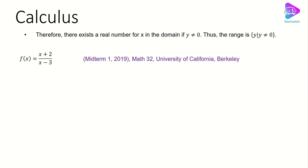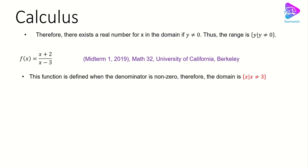Let's look at another example. This example has been extracted from a recent midterm from the University of California, Berkeley. You can plug in any real numbers inside this function, except when x is equal to 3. If you plug in x = 3, the denominator is going to be zero, so f(x) is going to be undefined. Therefore, the domain is any real number except x = 3.